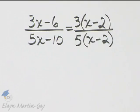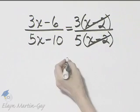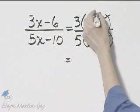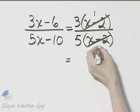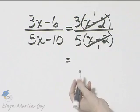And now we can divide out common factors. We have a common factor of x minus two. x minus two divides by x minus two one time. That's essentially what's happening. And x minus two divided by x minus two, that goes one time.